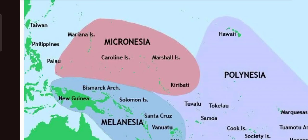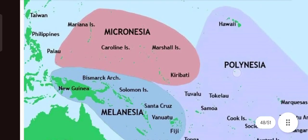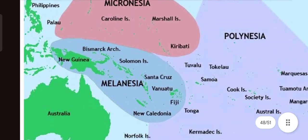At the center of Micronesia there is an island called Caroline Island. So to summarize: on the western side are Mariana Islands and Palau Island; on the eastern side are Marshall Island and Kiribati Island; and at the center is Caroline Island.